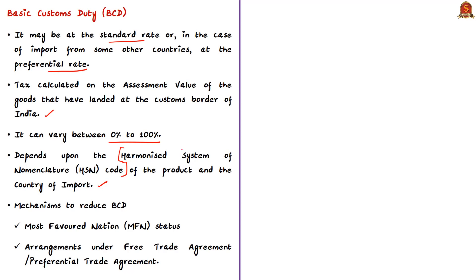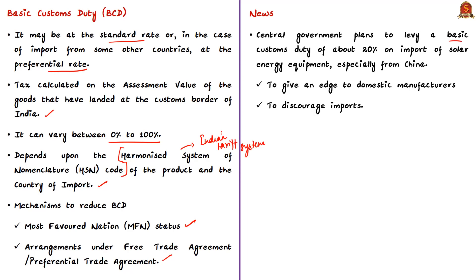India's tariff system is based on the HSN of the Customs Cooperation Council. Mechanisms like most favoured nation arrangements, free trade agreements, or preferential trade agreements can help reduce BCD rates. The central government has planned to impose a BCD of about 20% on the import of solar energy equipment, especially from China. This move is expected to give an edge to domestic manufacturers and discourage imports. When an existing BCD is increased or a new BCD is imposed, it aims to curb imports — with higher duty increasing imported goods' prices, reducing their demand, and thereby reducing imports, which indirectly assists domestic manufacturers whose products become comparatively cheaper.